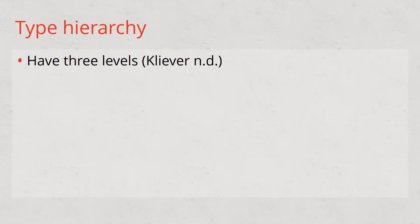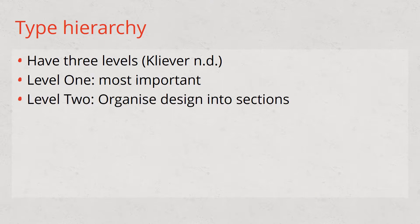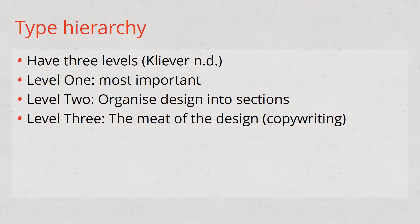With a type hierarchy I'd recommend you have three levels. Level one is the most important information — your page title. Level two organizes your design into sections so people can skim to find what they want to read. Level three is the body copy — the meat of the design. A lot of people look for fancy fonts for levels one and two and leave level three as an afterthought. I actually recommend you do it the other way around: find your body text font first, because that makes up the bulk of the information on your web page and influences the overall design far more than your heading font does.